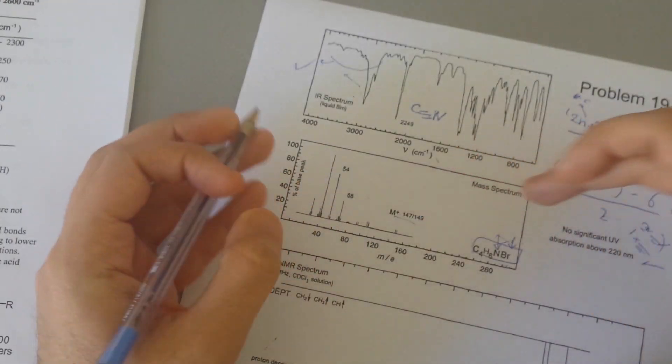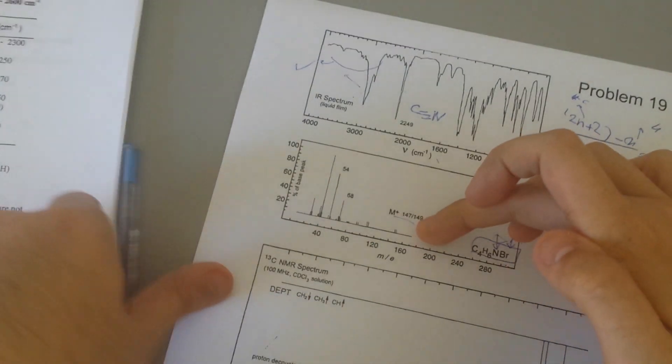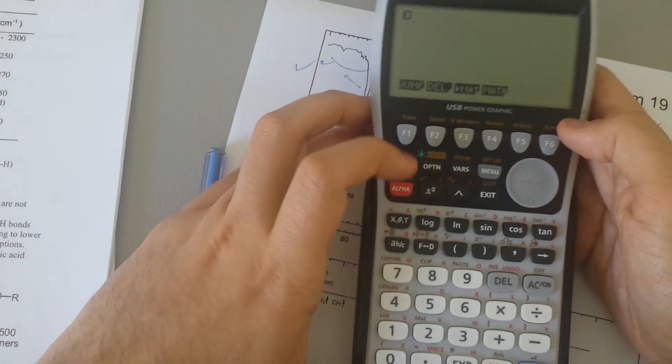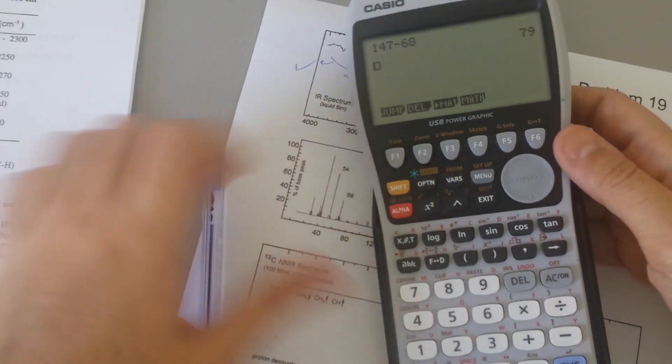Then we're going to go here. The key here is just you subtract this and you will see what we left off. So you know, 147 minus 68 is 79.